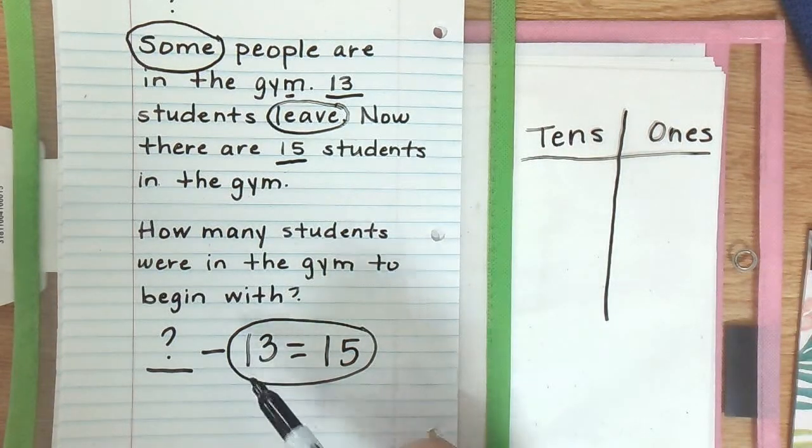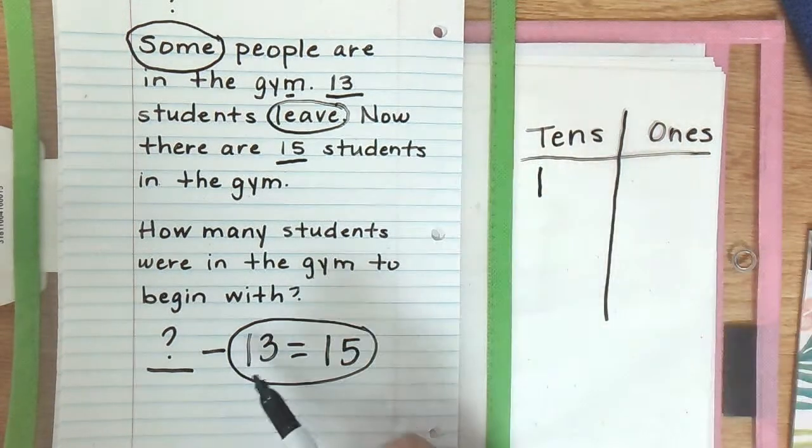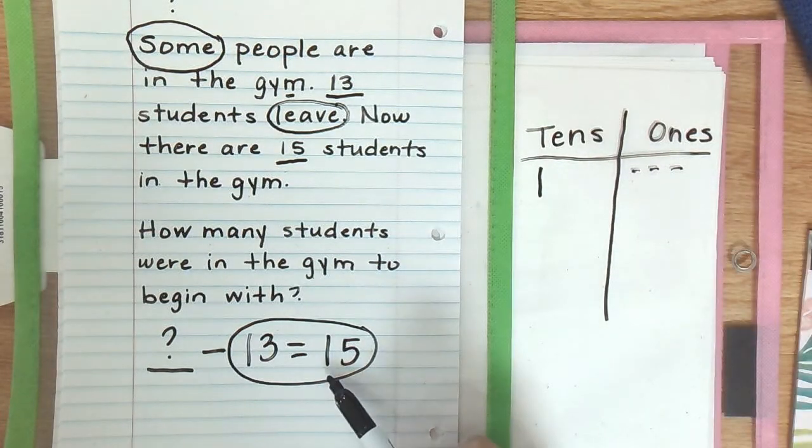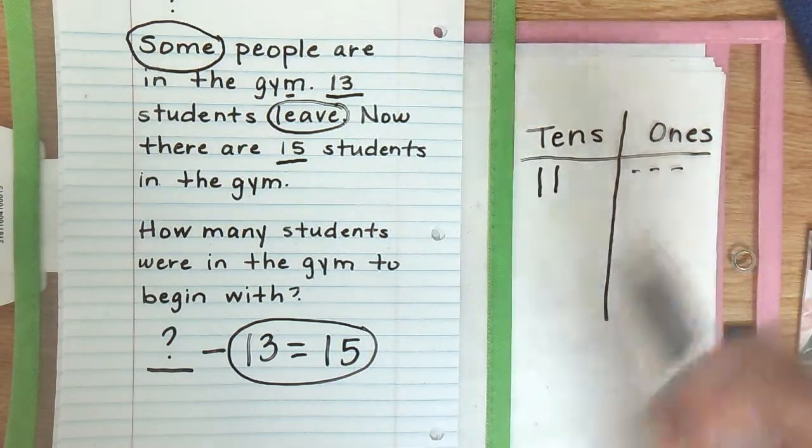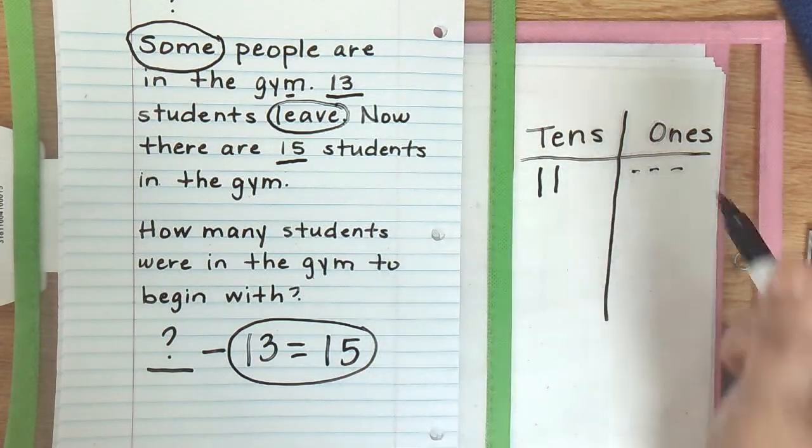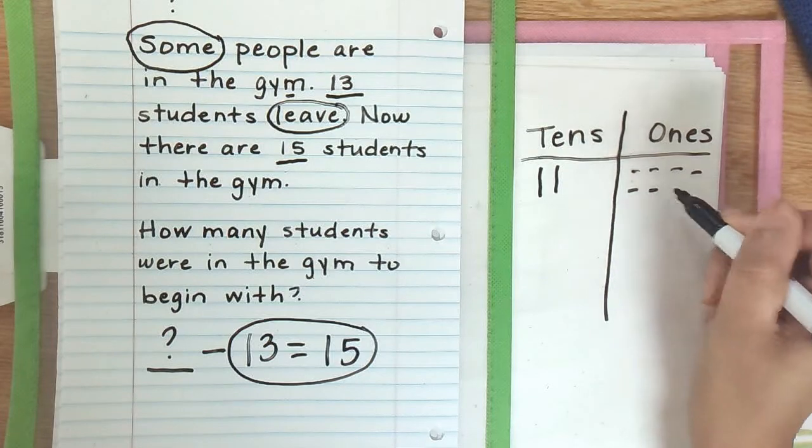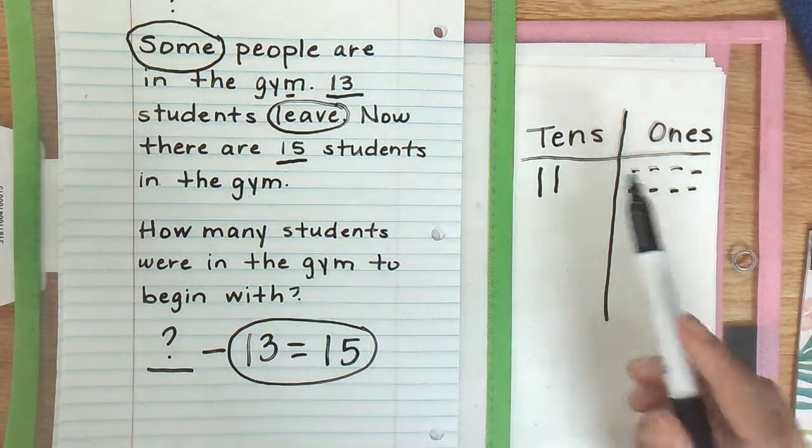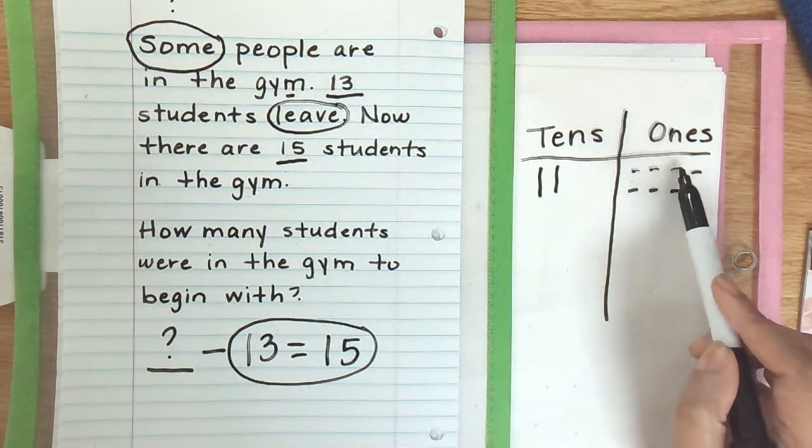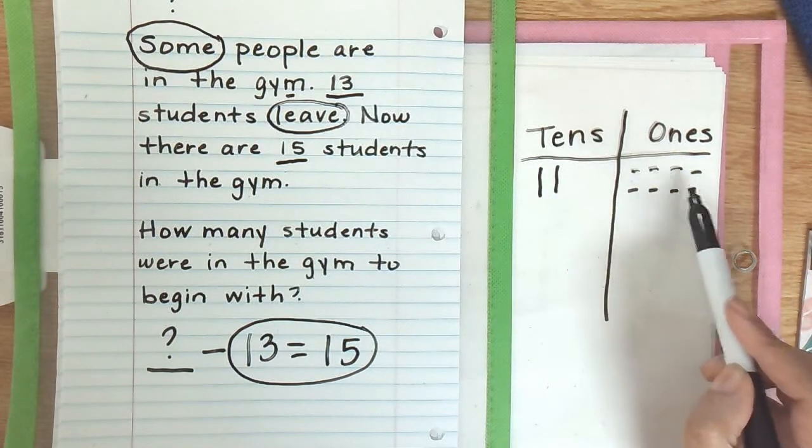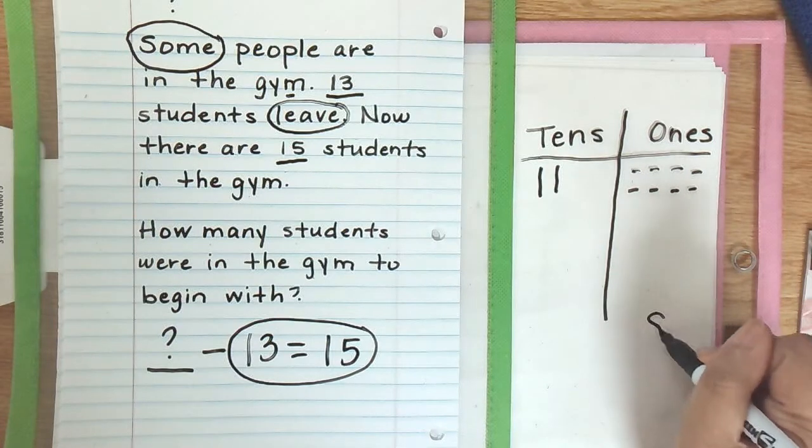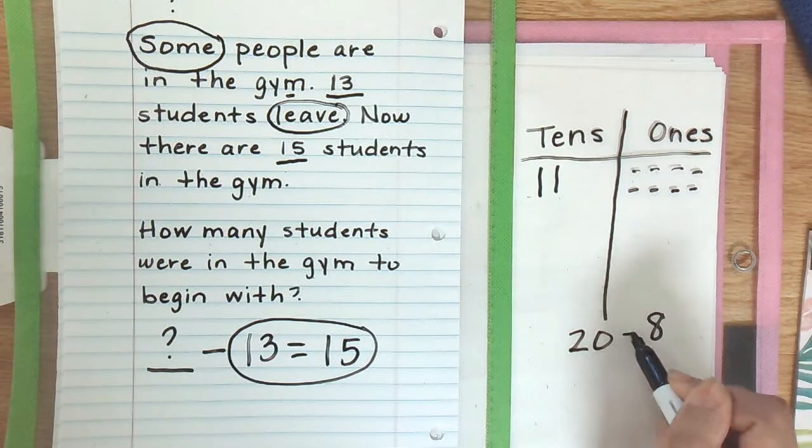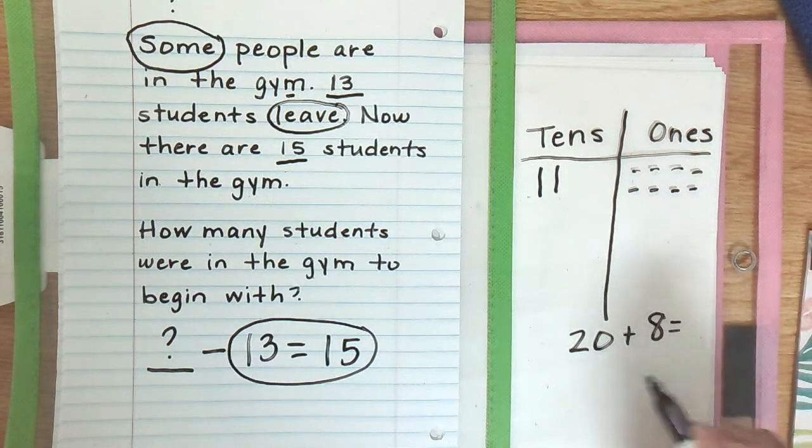So I am going to add 13 plus 15. In the number 13 there is one 10. In the number 13 there are three ones: one, two, three. In the number 15 there is one 10. In the number 15 there are five ones: one, two, three, four, and five. Since we are adding we are combining these together. So we have one, two, three, four, five, six, seven, eight ones. And one, two tens. Two tens equals 20. So 20 plus 8 equals 28.